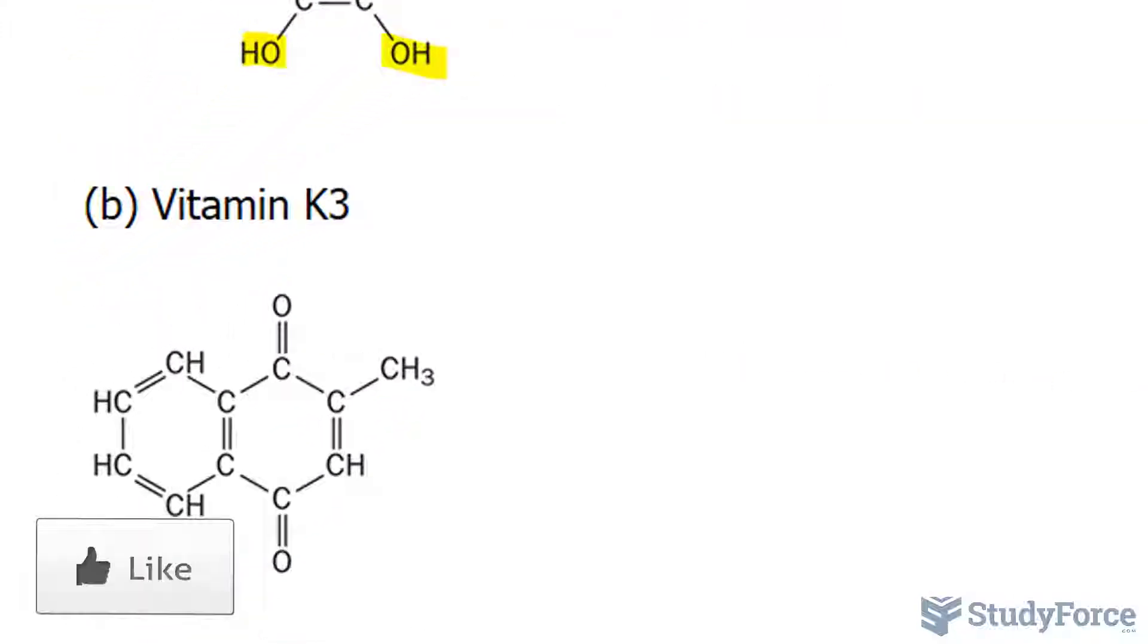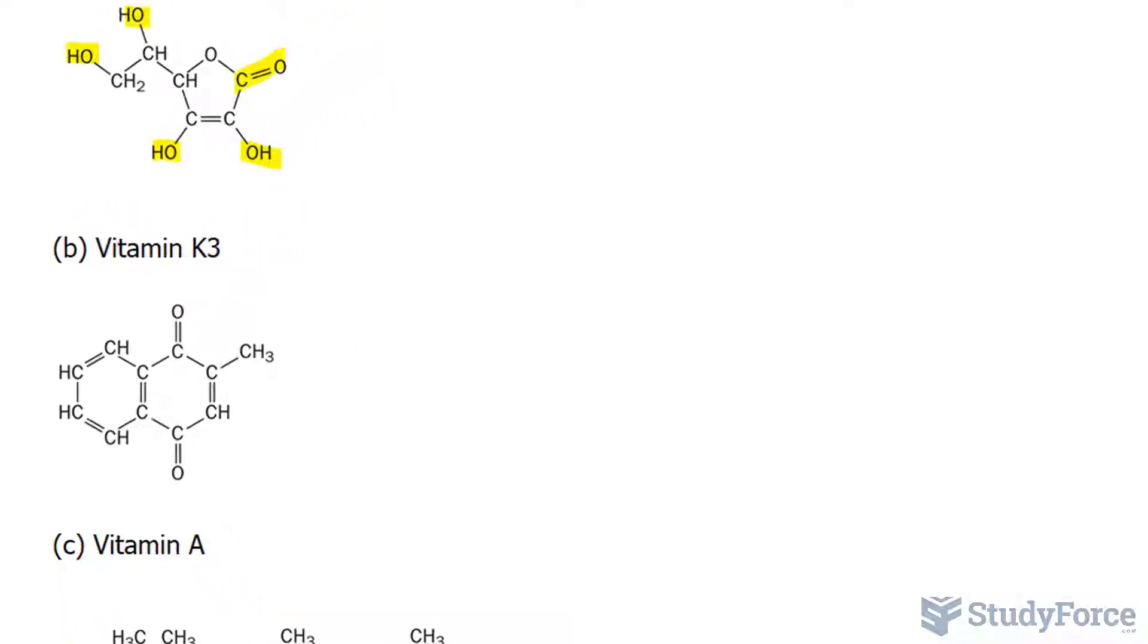In the next vitamin, vitamin K3, the C-C bonds in this structure are non-polar. And the C-H bonds are also non-polar. Even though there's a slight gravitation of electrons towards the carbon, it's so minimal that any C-H bond is not considered polar. Just like in the previous molecule, though, there is a carbonyl bond, and there are two of them.